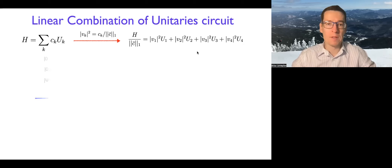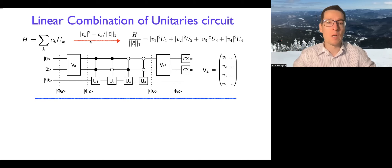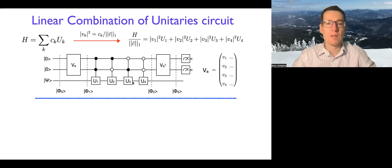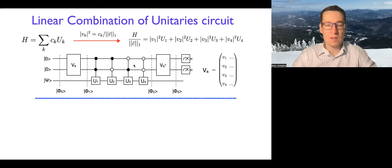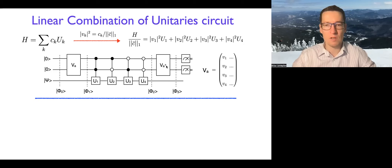The reason the squared coefficients need to sum to one is because they come out of the unitary transformation used to prepare the circuit. This circuit consists of multiple ancillas, and the number of ancillas scales logarithmically with the number of unitaries in the sum. For four unitaries, we need just two ancillas. On top of the controlled unitaries, we also need a so-called prepare circuit, which is a unitary transformation of ancilla qubits, then a select part, then the conjugated prepare again.